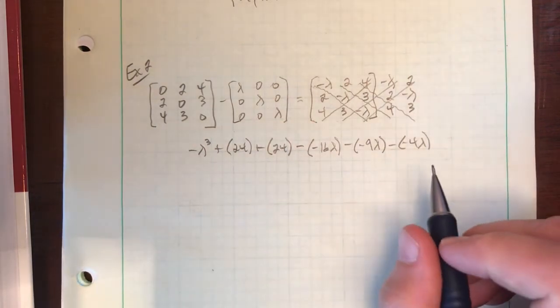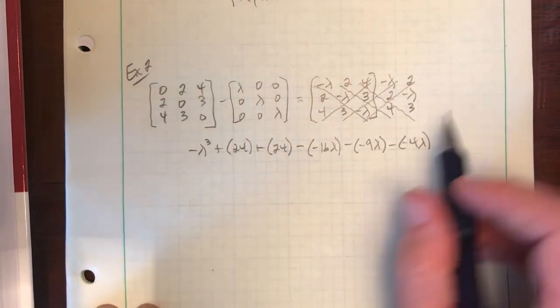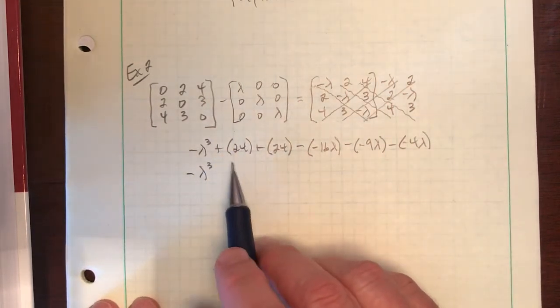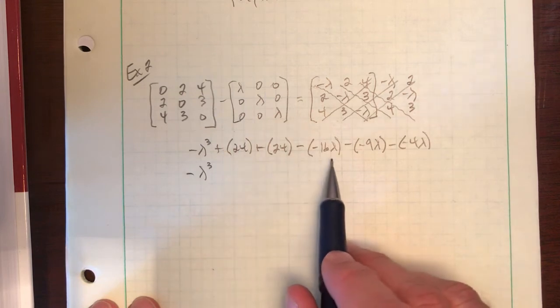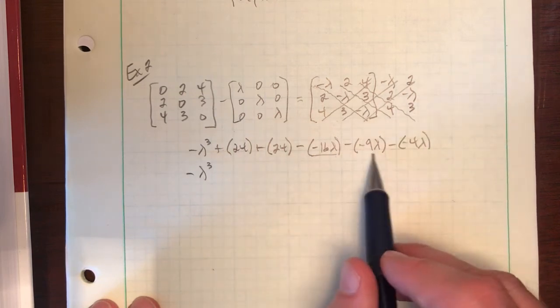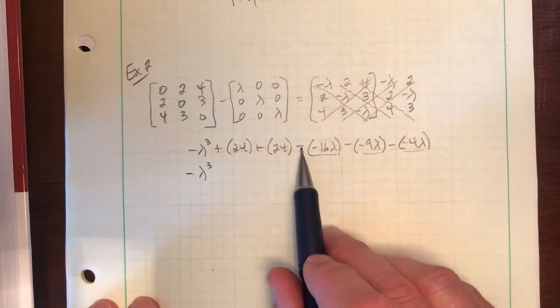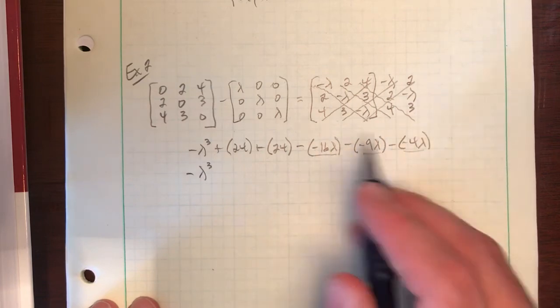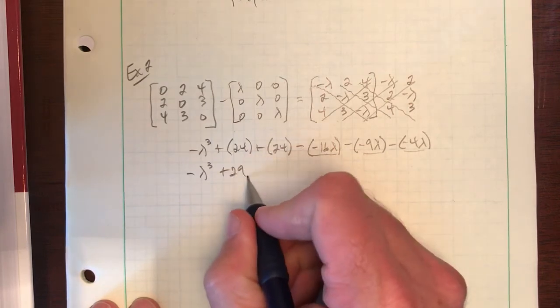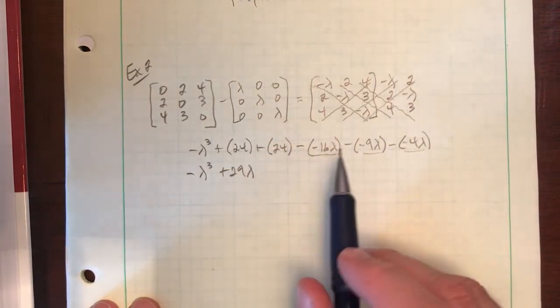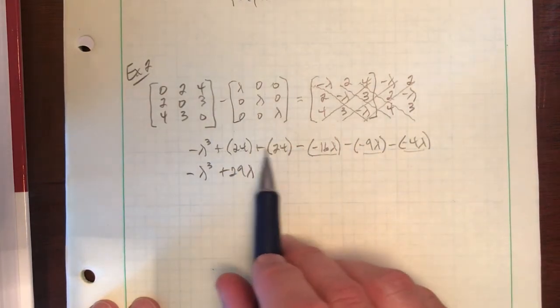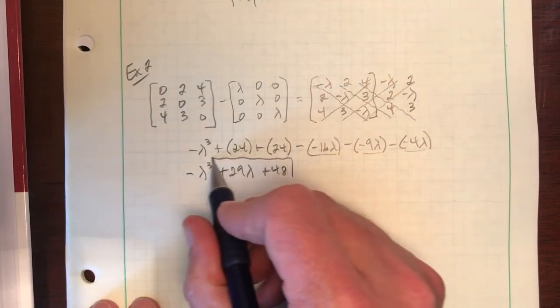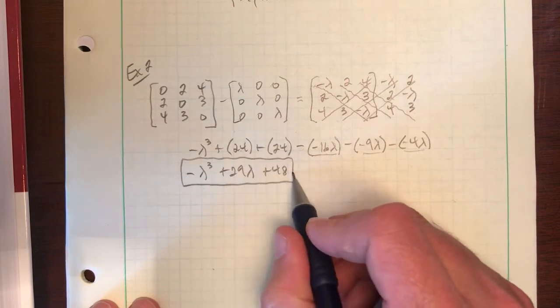All right. So putting this all together, it looks like there's my negative lambda cubed. There's no squares, so I'll jump right to my three lambda terms. Notice they're all going to end up being positive. So 4 plus 16 plus 9, so we've got 29 lambda. And then finally my two constants. What do we have? Just 24 and 24, 48. There's our characteristic polynomial, and we're good.